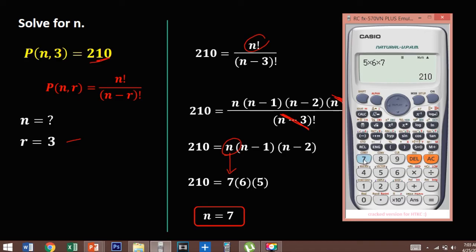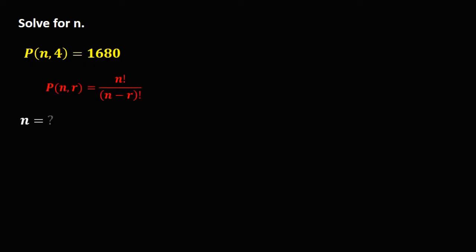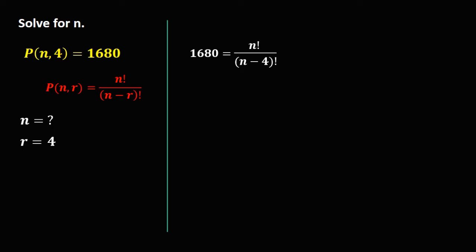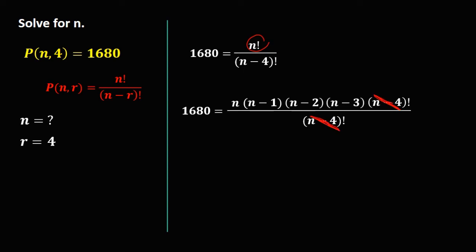To check: with n equal to 7 and r equal to 3, P(7,3) is 210. So n is confirmed to be 7. For the next problem, n is unknown and r is 4. We have 1680 equals n factorial over n minus 4 factorial. Rewriting n factorial as n times n minus 1 times n minus 2 times n minus 3 times n minus 4 factorial, we can eliminate the n minus 4 factorial.